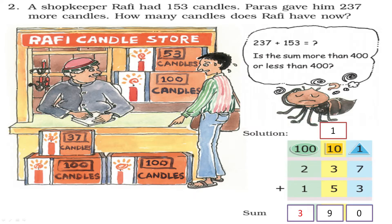Question number 2. A shopkeeper named Rafi had 153 candles. Paras gave him 237 more candles.